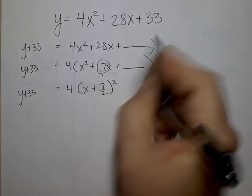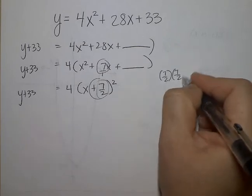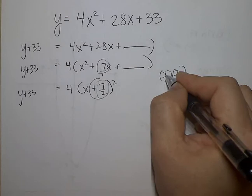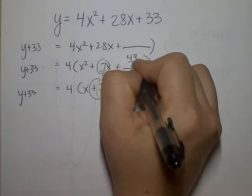Then I need to take the 7 halves, and I have to square it. So I could use the calculator, or I can come off the side and go 7 halves times 7 halves, which is 49 over 4. And I'm going to draw an arrow here.